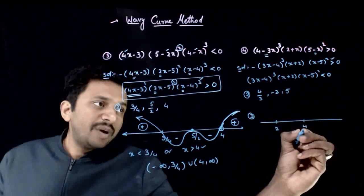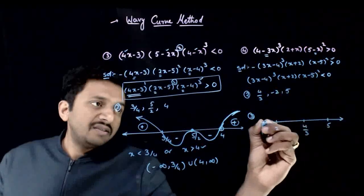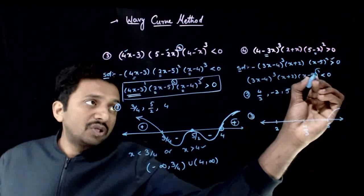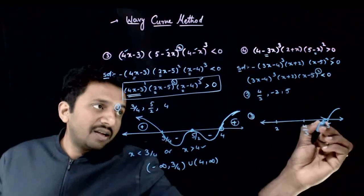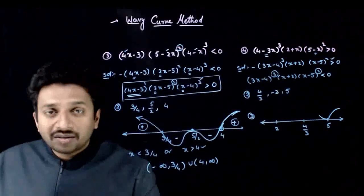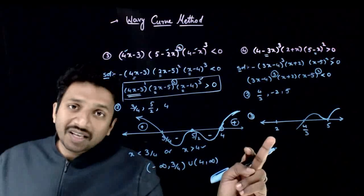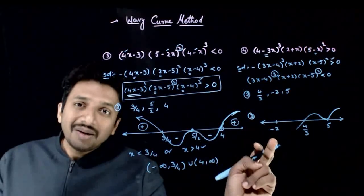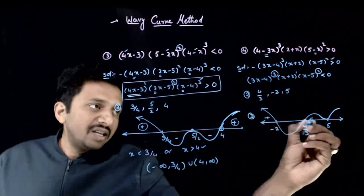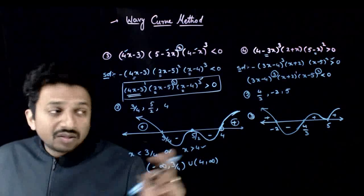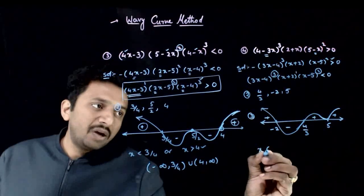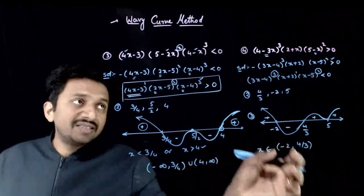Let us plot the wavy curve. We have −2, then 4/3, then 5 on the number line. Starting from above the real line, at x = 5 the power of (x − 5)² is even, so the curve stays — it touches and returns. At x = 4/3, the power of (3x − 4) is odd, so the sign changes. At x = −2, the power of (x + 2) is 1, odd, so the sign changes again. Since we want the negative interval to satisfy our inequality (less than 0), the solution is x belongs to (−2, 4/3).